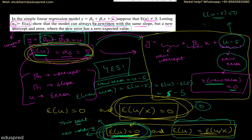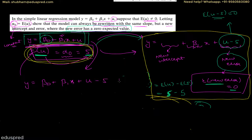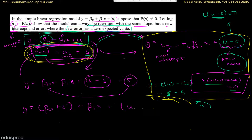Now let's apply this transformation to the equation. We have to rewrite the equation so that the new error term comes out to be u minus five. What if I subtract five and add five to the equation? I can write: y equals beta zero plus five plus beta one x plus u minus five. I keep u minus five together as the new error, and the plus five is written with the intercept term.